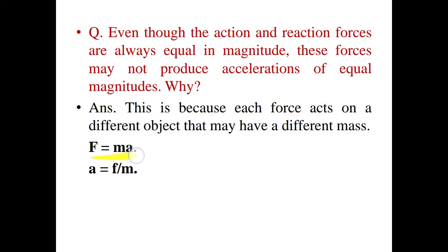As we know, according to Newton's second law, F = ma, so A = F/M, where A is the acceleration produced in the object, F is the external force applied, and M is the mass of the object. We can see that acceleration is inversely proportional to the mass of the object — more is the mass, less will be the acceleration produced. Earth has a very, very large mass as compared to the objects or persons situated on its surface, so the acceleration produced in the earth is negligibly small and we cannot notice it. Each force acts on a different object, and those objects may have different masses.